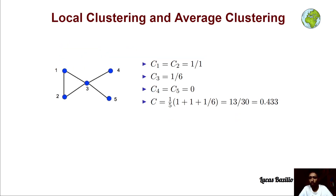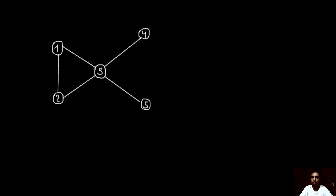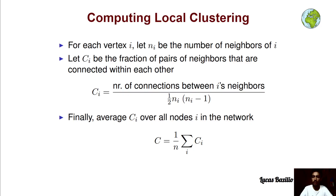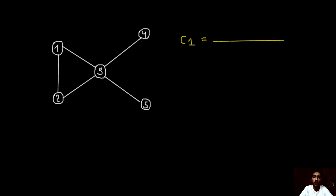To visualize this definition of local clustering in an easy way, we can see this with an example. Let's break down these calculations step by step, beginning with the computation of the local clustering for node 1. So this is c1.